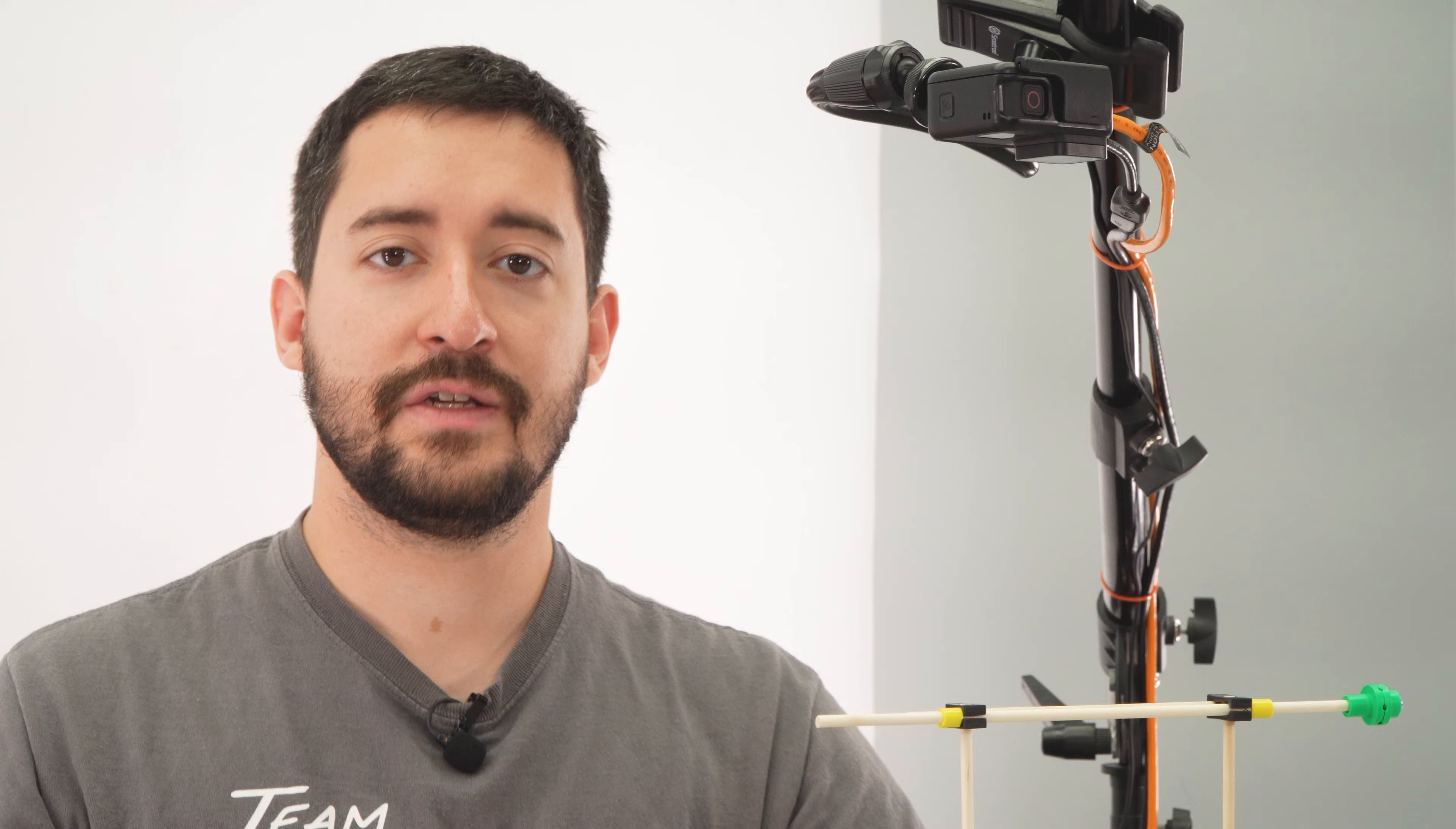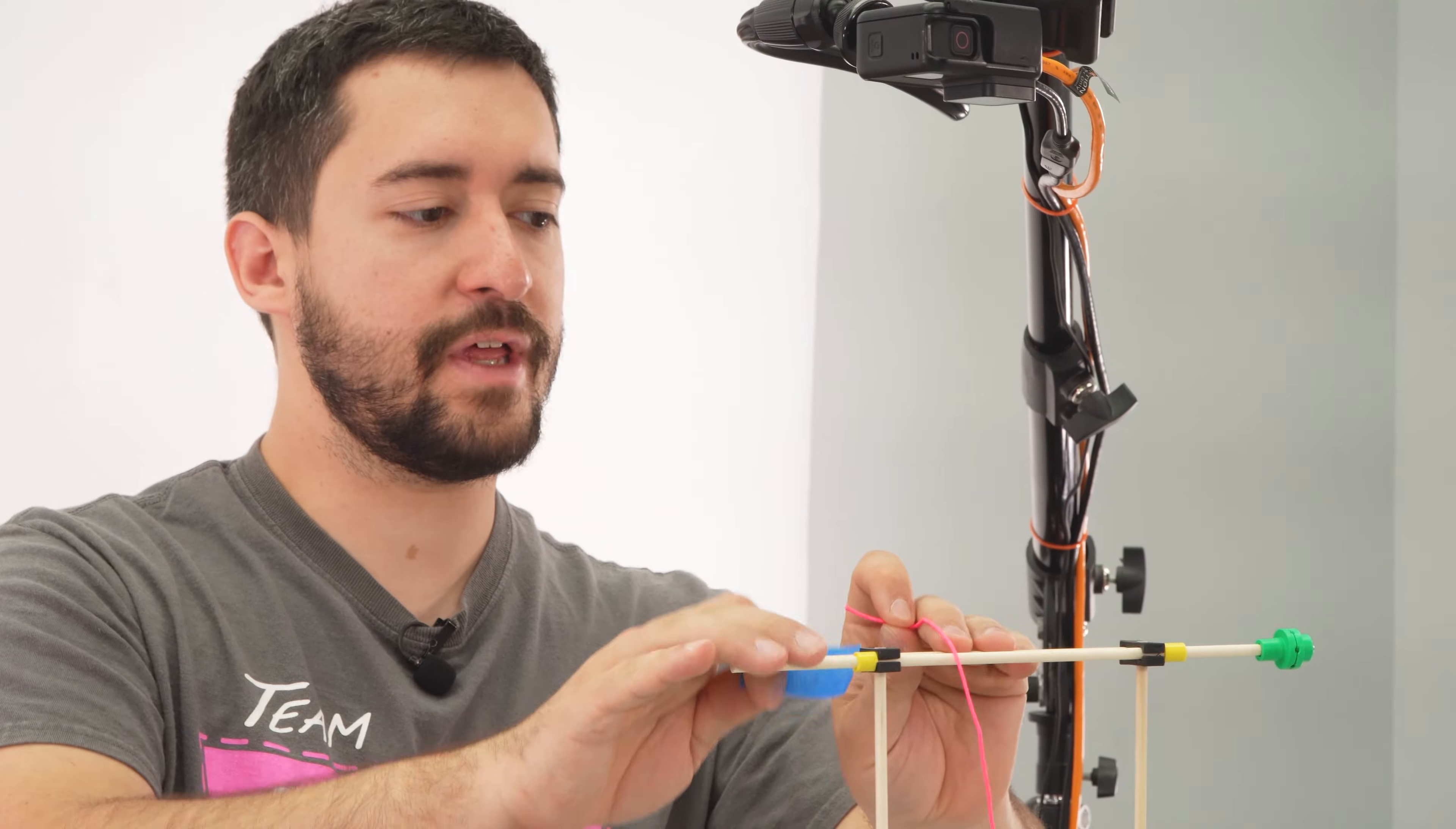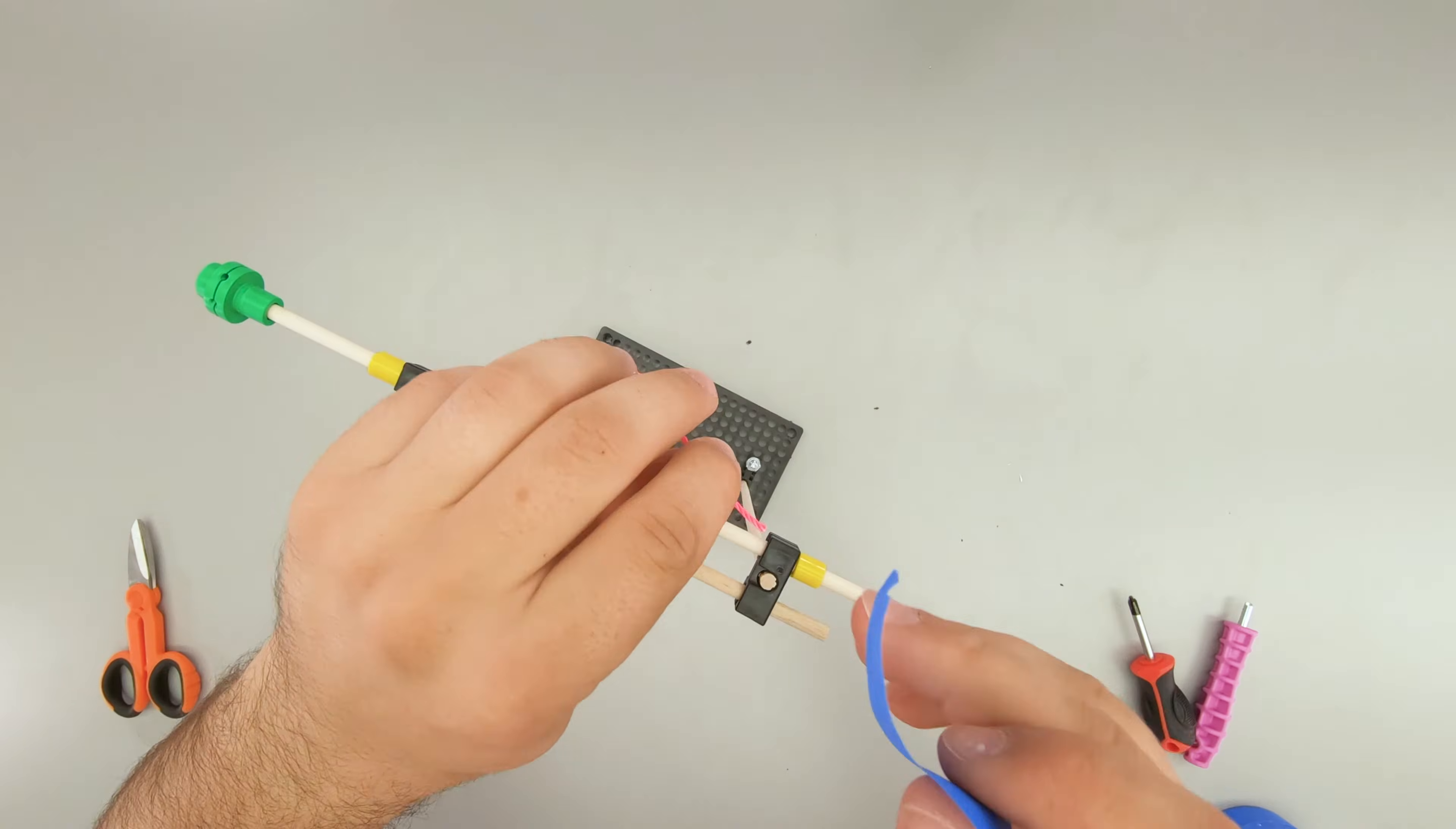Now we're ready to add the lift. To add your lift mechanism, start by taking your string and taping it to the dowel that has the hub on it. The one that can spin.